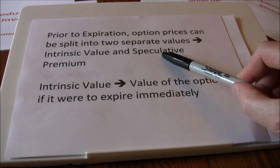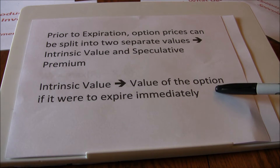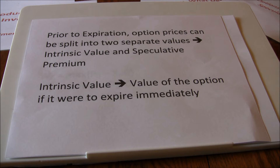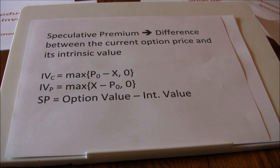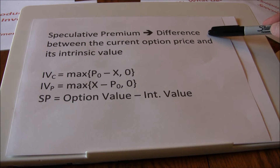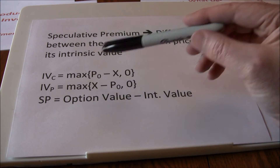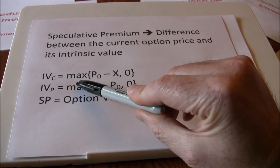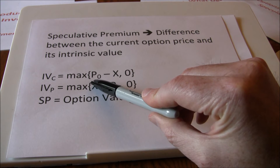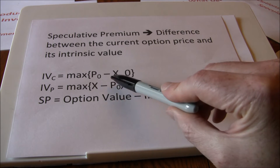The option price or option value is going to be the combination of these two values added together. The intrinsic value is just the value of the option if it were to expire immediately — so if the option expired today, what would it be worth to us? The intrinsic value of a call is equal to the maximum of the current stock price minus the exercise or strike price, or zero, whichever is larger.